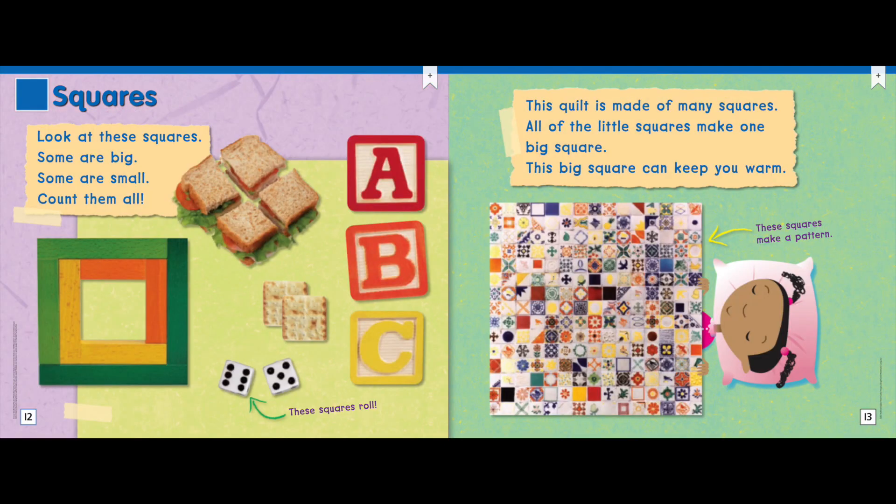How many squares do you see in each game? Look at these squares. Some are big. Some are small. Count them all. This quilt is made of many squares. All of the little squares make one big square. This big square can keep you warm.